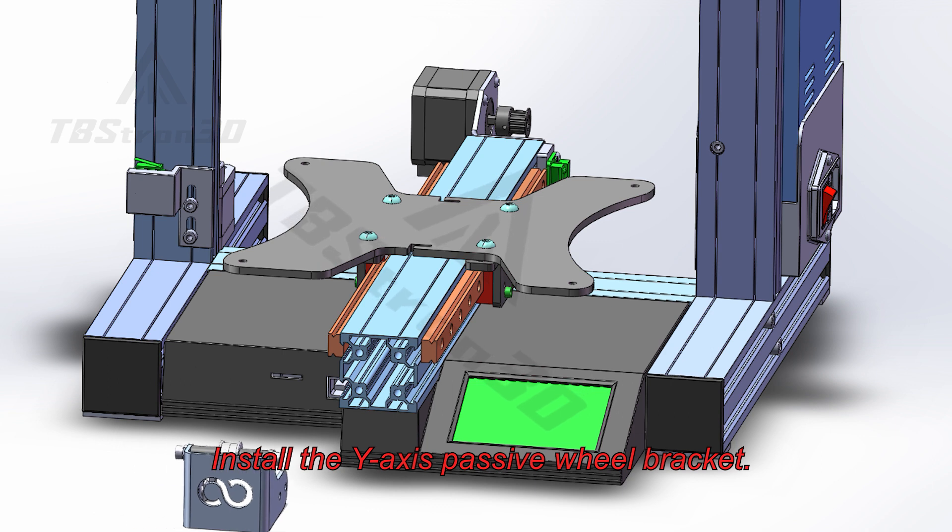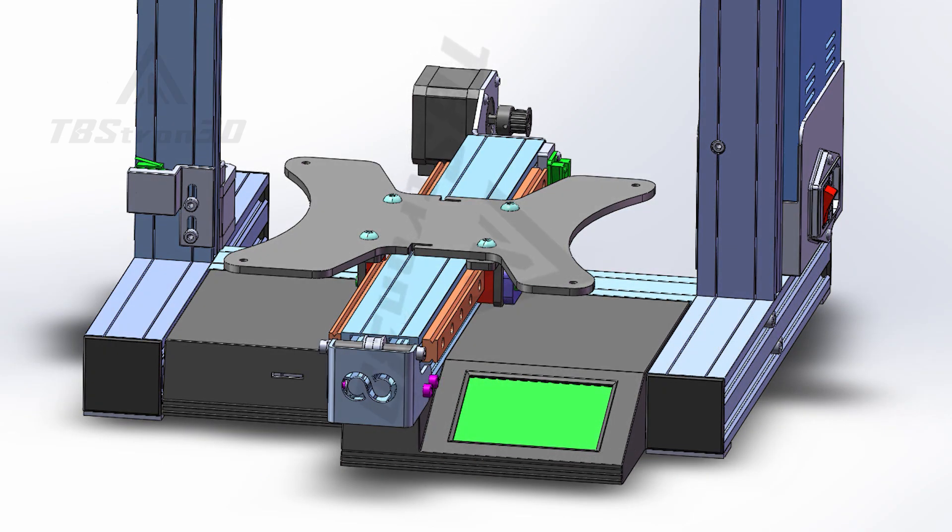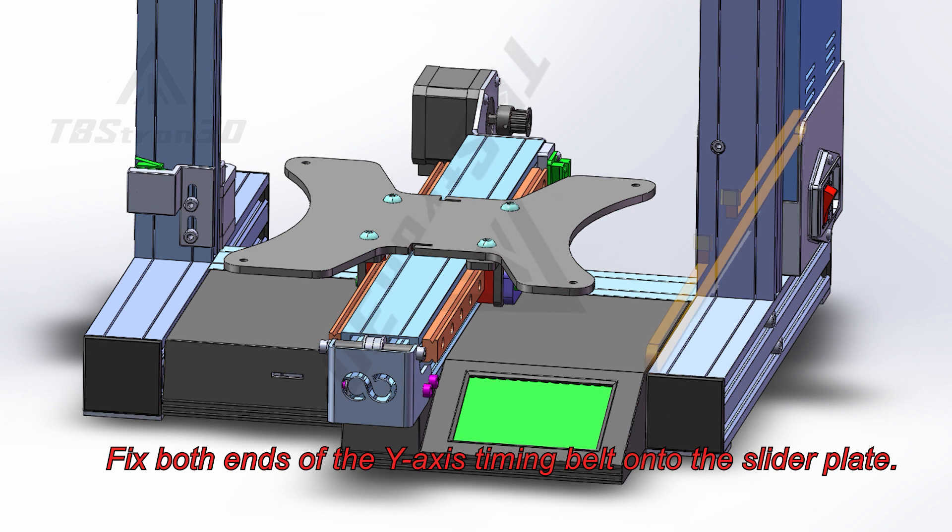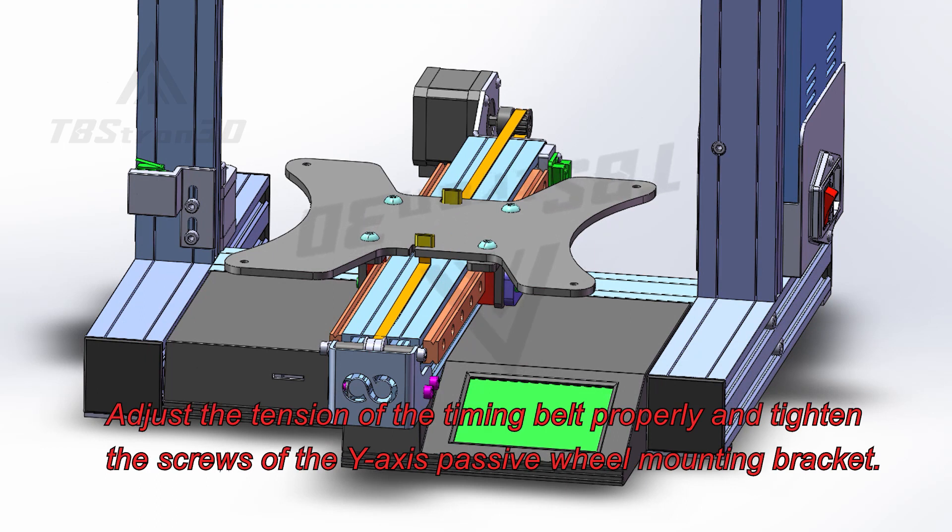Install the Y axis passive wheel bracket. Fix both ends of the Y axis timing belt onto the slider plate. Adjust the tension of the timing belt properly and tighten the screws of the Y axis passive wheel mounting bracket.